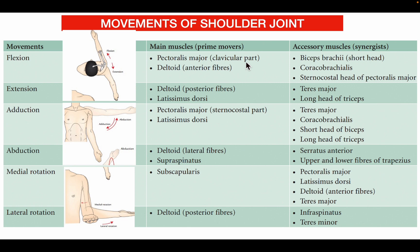Movements of the shoulder joint are flexion, extension, adduction, abduction, medial rotation, lateral rotation, and circumduction. Synergist muscles work together for each movement. Flexion: pectoralis major, deltoid, biceps brachii, coracobrachialis. Extension: deltoid, latissimus dorsi, teres major, long head of triceps. Adduction: pectoralis major, latissimus dorsi, teres major, coracobrachialis, short head of biceps, long head of triceps. Abduction: deltoid, supraspinatus, serratus anterior, upper and lower fibers of trapezius. Medial rotation: subscapularis, pectoralis major, latissimus dorsi, deltoid, teres major. Lateral rotation: deltoid, infraspinatus, and teres minor.